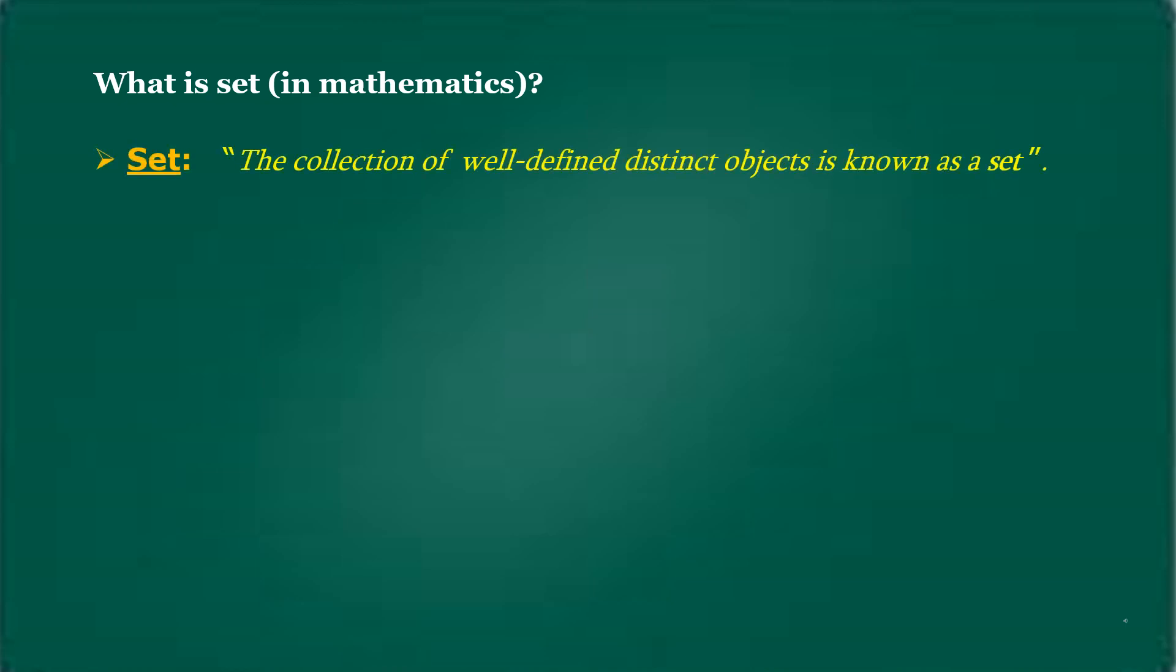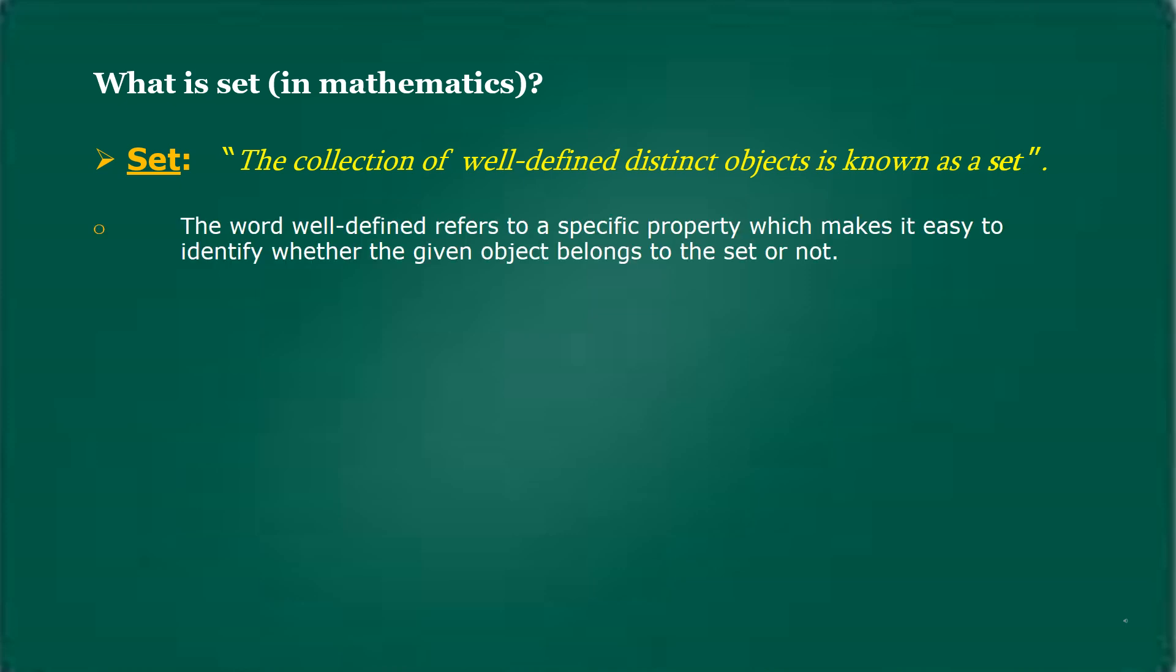What is set in mathematics? Set: the collection of well-defined distinct objects is known as a set. The word well-defined refers to a specific property which makes it easy to identify whether the given object belongs to the set or not.